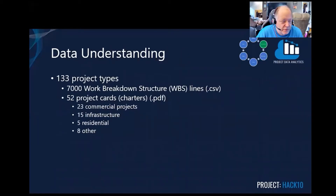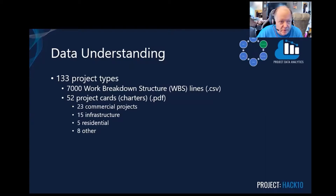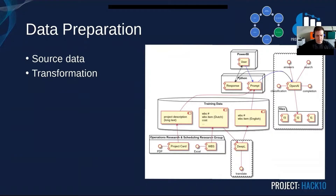The data we used for this project consisted of 133 project types, with 7,000 work breakdown structure lines that we used to train our model, and 52 project cards or charters that we used to validate our model. Project descriptions and WBS were taken from the Operations Research and Scheduling Research Group website. The WBS descriptions were in Dutch, so these were translated into English using DeepL Translate.